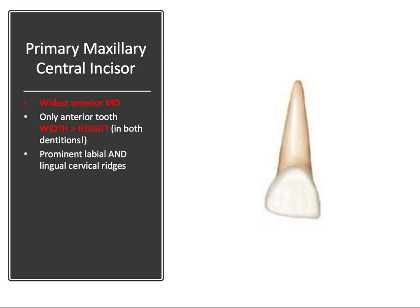Let's go through each primary tooth in order and in sequence, covering the high yield facts you need to know for the board exam. For consistency, the mesial side of each tooth will be on the right for all images, and the distal side will be on the left.